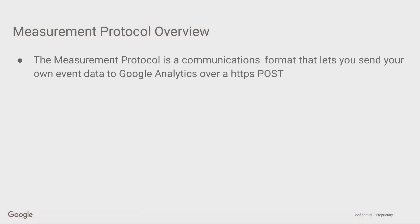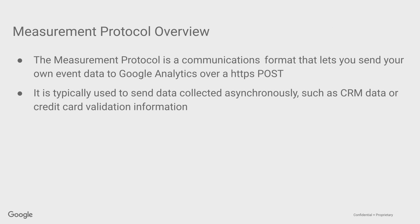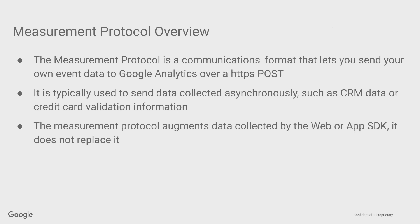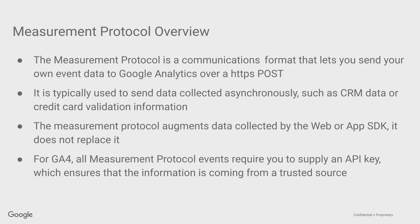So you might wonder, what is the measurement protocol? The measurement protocol is a communications format that lets you send your own event data to Google Analytics over an HTTP POST request. It's typically used to send data collected from an offline system, like a CRM or a credit card validation system. It lets you send data that's asynchronous, so it happens after the event that you collect on the web or app SDK. The measurement protocol augments the data you're collecting from the web or app — it's not intended to replace it. You still need to use the SDKs to get a full picture of your users. For GA4, we introduced a new feature: an API key that requires you to sign all the data that comes to the measurement protocol. This means you can ensure that the data you're sending is actually coming from you and not from some spammer.